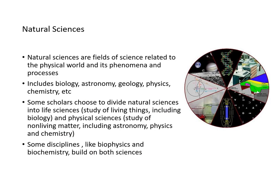Science can be broken into sub-fields. Natural sciences are fields of science related to the physical world, its phenomena and processes — including biology, astronomy, geology, physics, and chemistry. Natural science is further divided into life sciences (the study of living things, including biology) and physical sciences (the study of non-living matter, including astronomy, physics, and chemistry). Some disciplines like biophysics and biochemistry build on both.